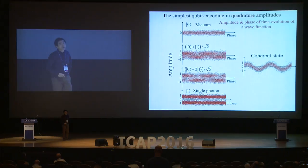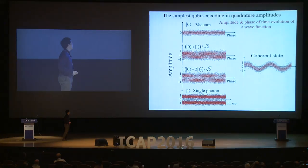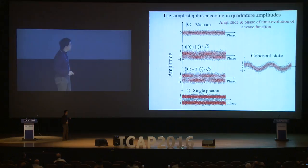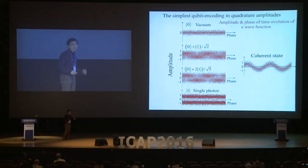This is our hybrid approach of quantum information encoding. This is the simplest qubit encoding in quadrature amplitude — qubit encoding in amplitude and phase of the time evolution of a wave function. This is just a vacuum, so there is no time dependence. And this is just a single photon. But if you make a superposition of 0 and 1 — vacuum and single photon — you will have some wavy structure, and we encode qubit information in this amplitude and phase. Of course, this is a coherent state.